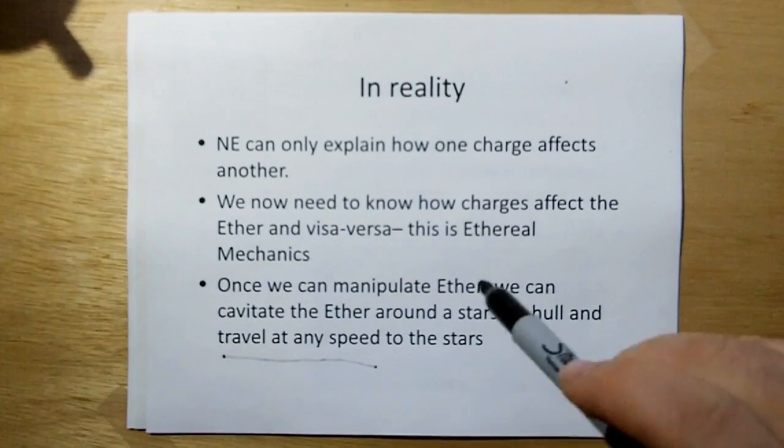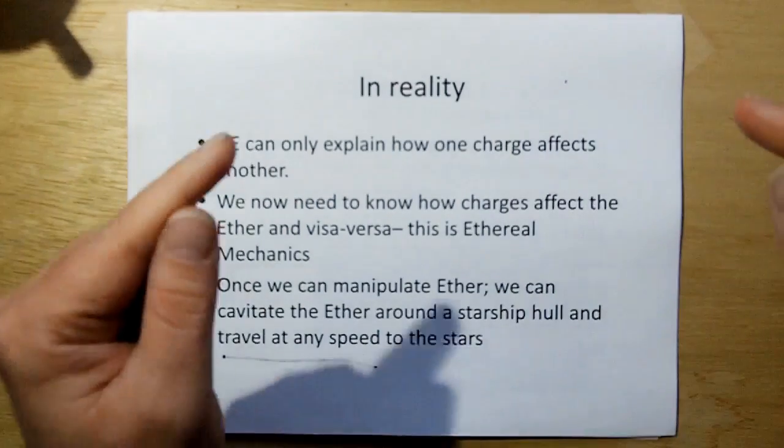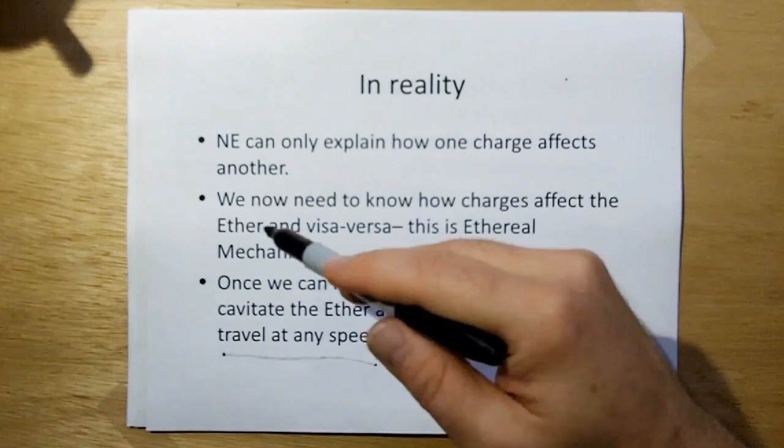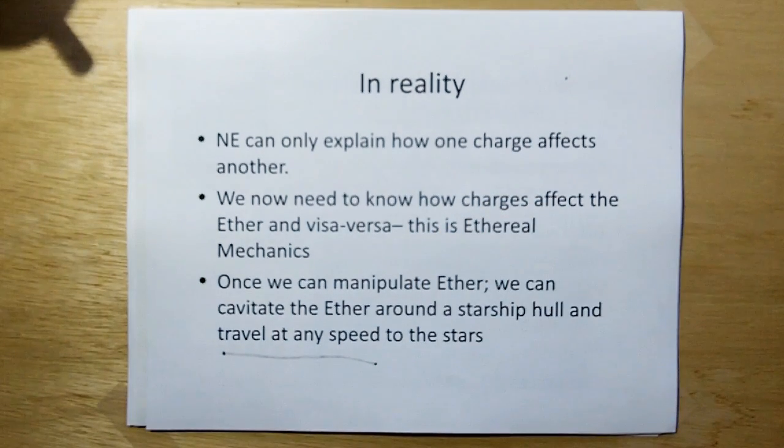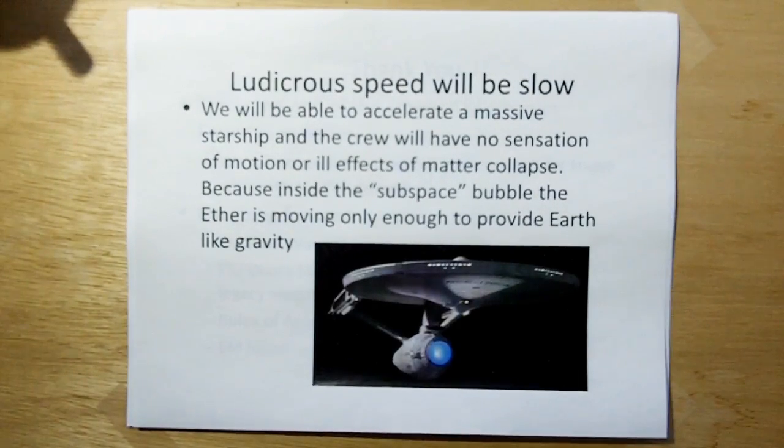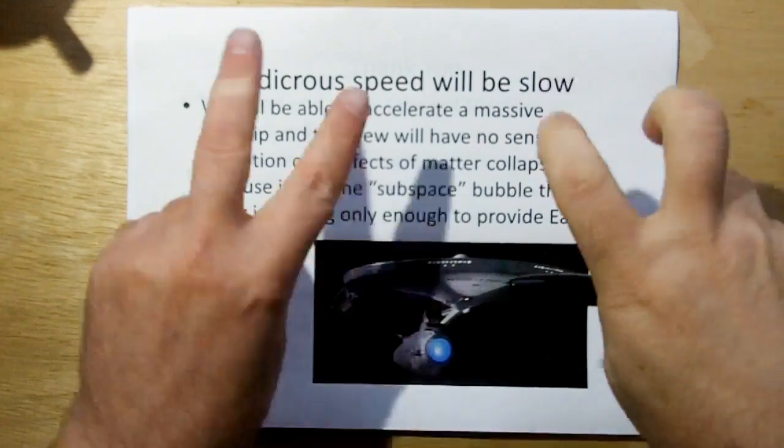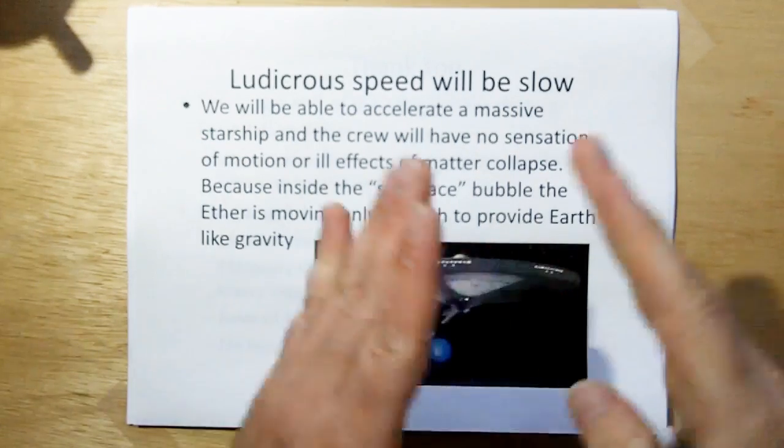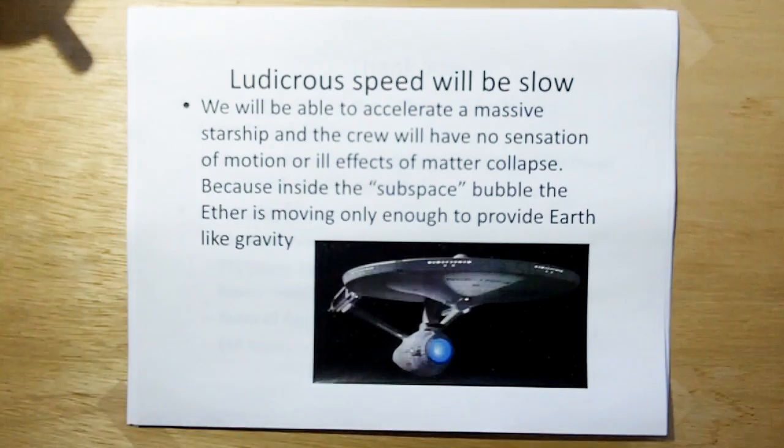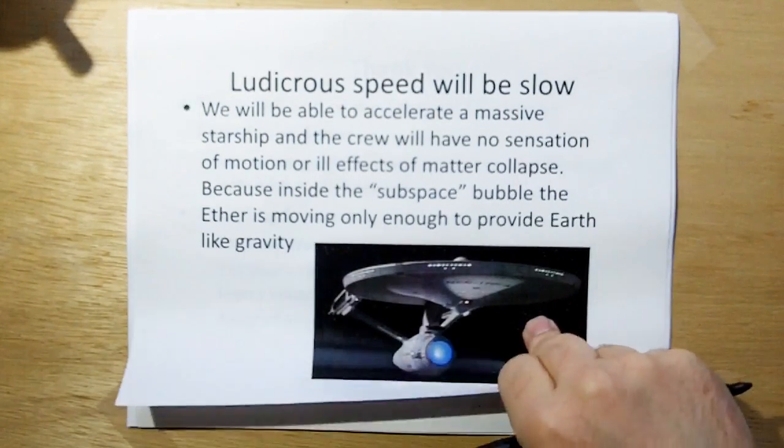So in reality, new electromagnetism doesn't only explain how one charge affects another. It doesn't explain what goes on in between. So we now need to know how charges affect the ether and vice versa. This is what ethereal mechanics is about. Once we can manipulate the ether, we can cavitate the ether around a starship hull and travel at any speed to the stars. In fact, ludicrous speed is going to be slow gear. We'll be able to accelerate a massive starship and the crew will have no sensation of motion or ill effects of matter collapse. Because inside the subspace bubble, the ether is moving only enough to provide Earth-like gravity. So we're basically going to part the ether like a ship parts the water, move the ether around us, but keep ether moving just enough inside the starship to give ourselves the sensation of gravity. And that's how we're going to get off this godforsaken planet.